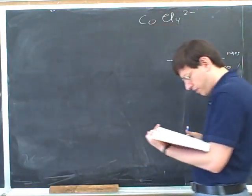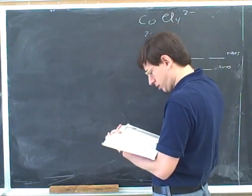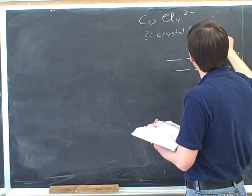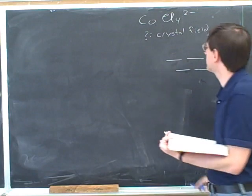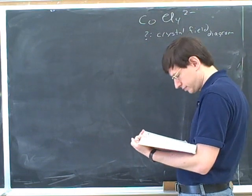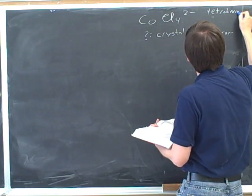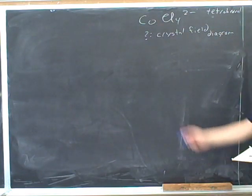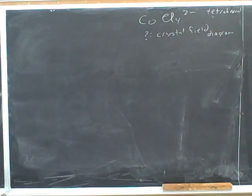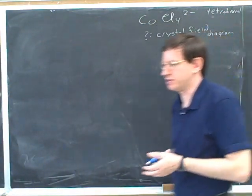So let's draw the electron configuration for this complex ion. Draw the crystal field diagram here. So we're given this complex, and we're told that this complex is tetrahedral. We're told the complex is tetrahedral, and we want to know its crystal field diagram.